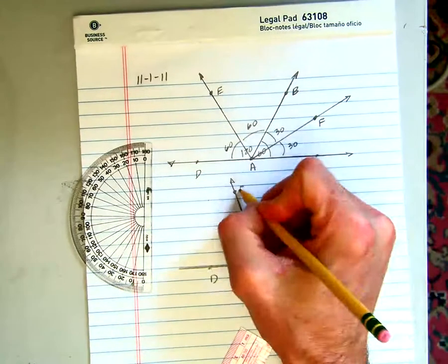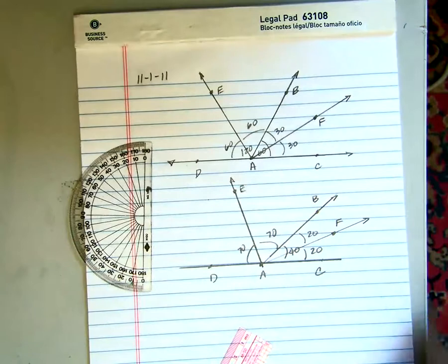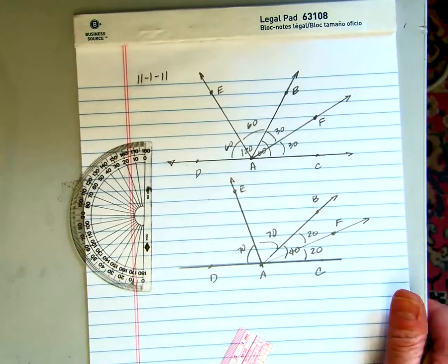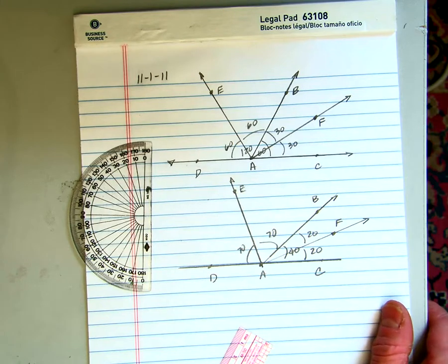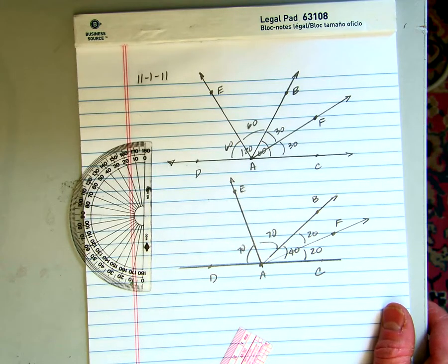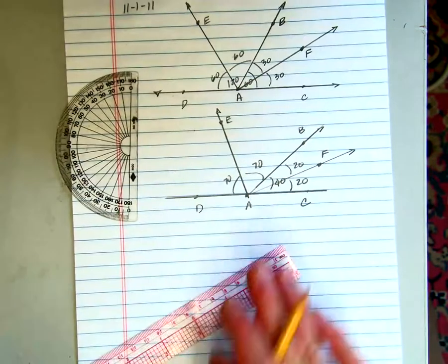This would have to be 70 and 70. I guess the thing that we're noticing here is that EAF in both cases seems to be a right angle. That would be a good conjecture—seems like it's always a right angle, at least by these two examples. What we have to do is then prove this in the last part of the problem. So let's take a look at how we might prove it.